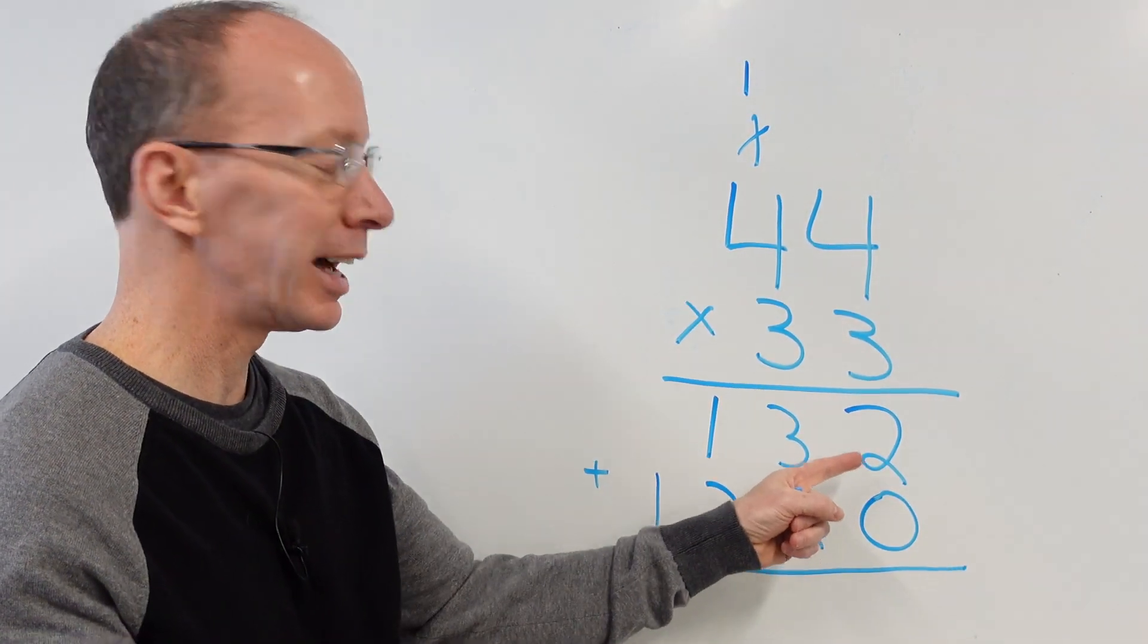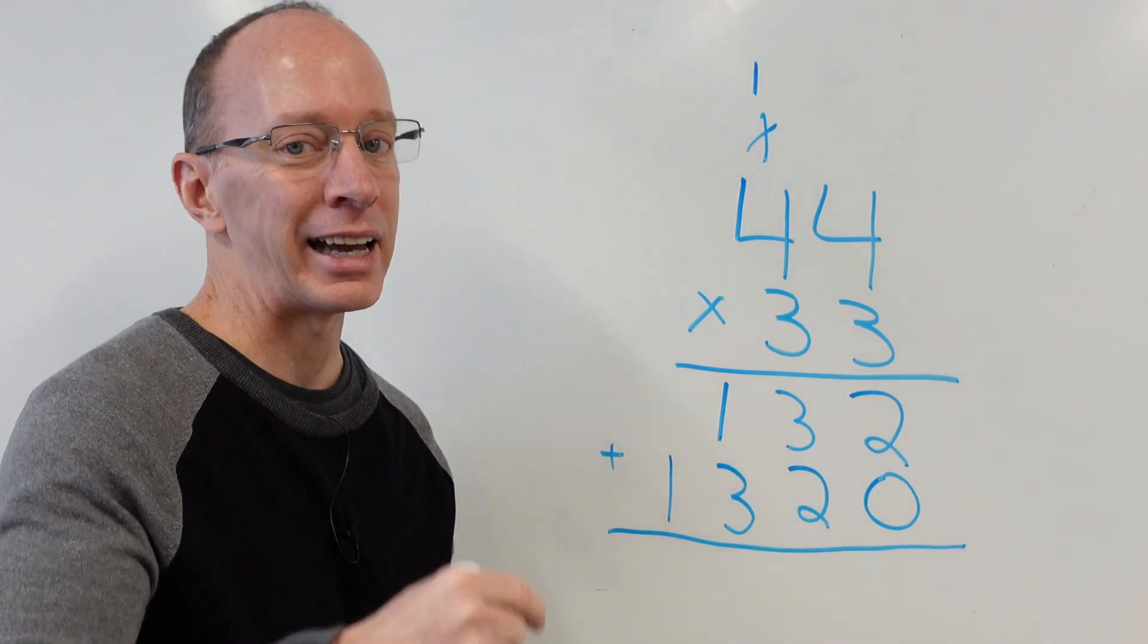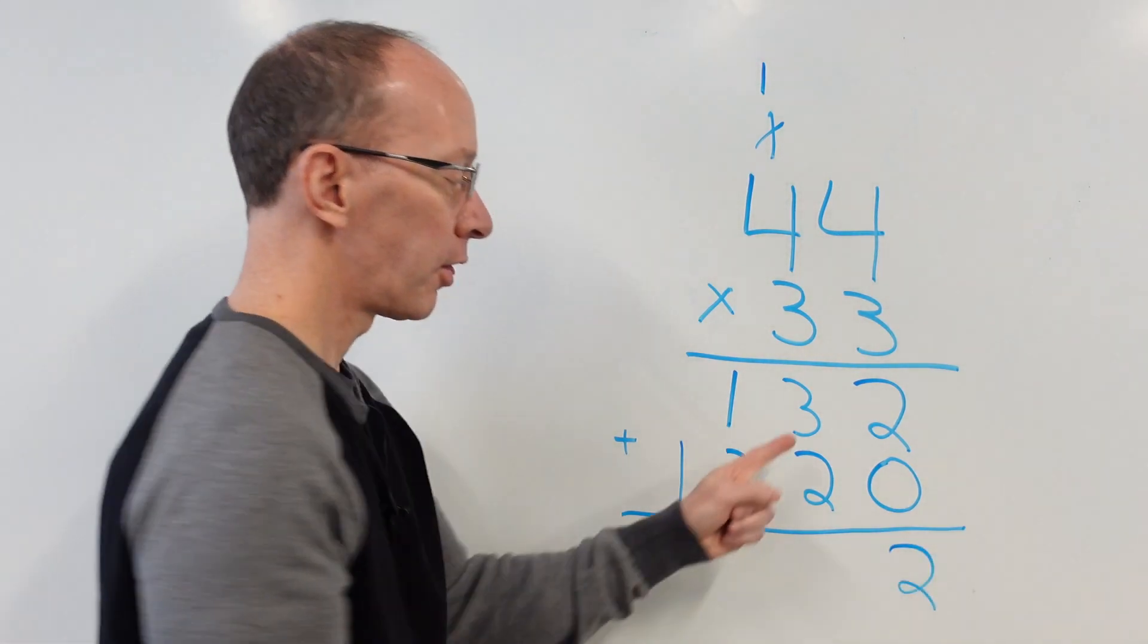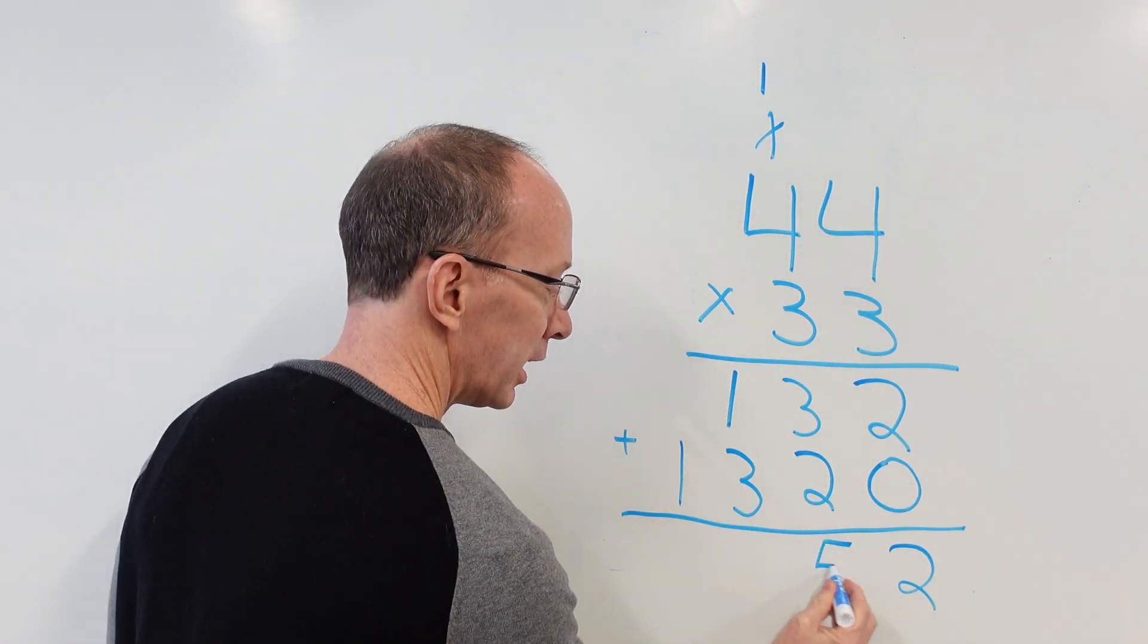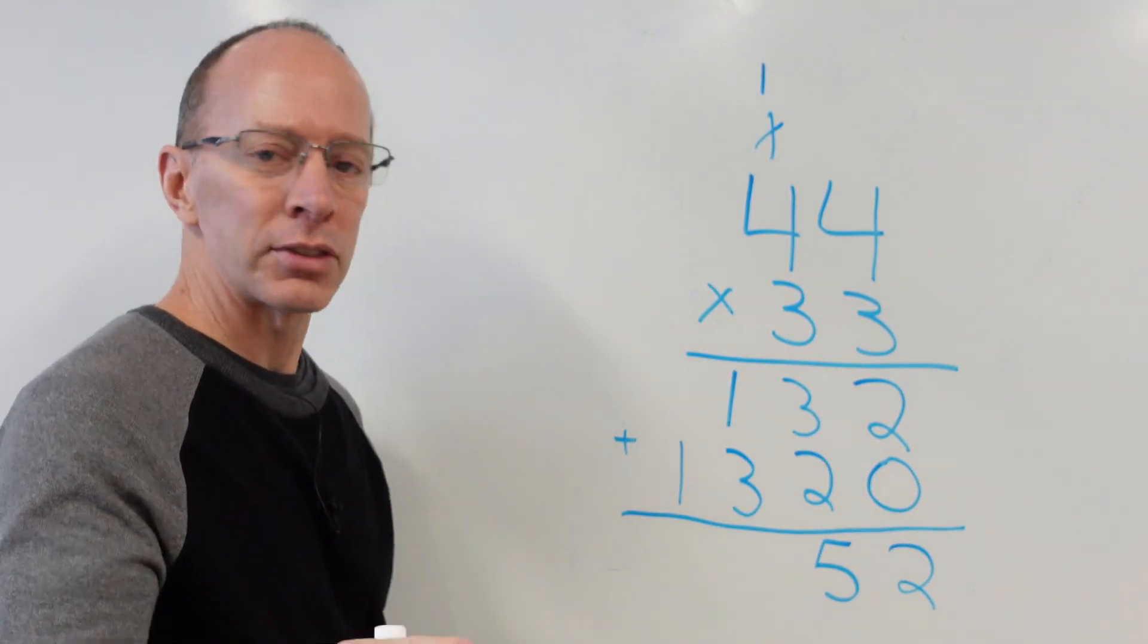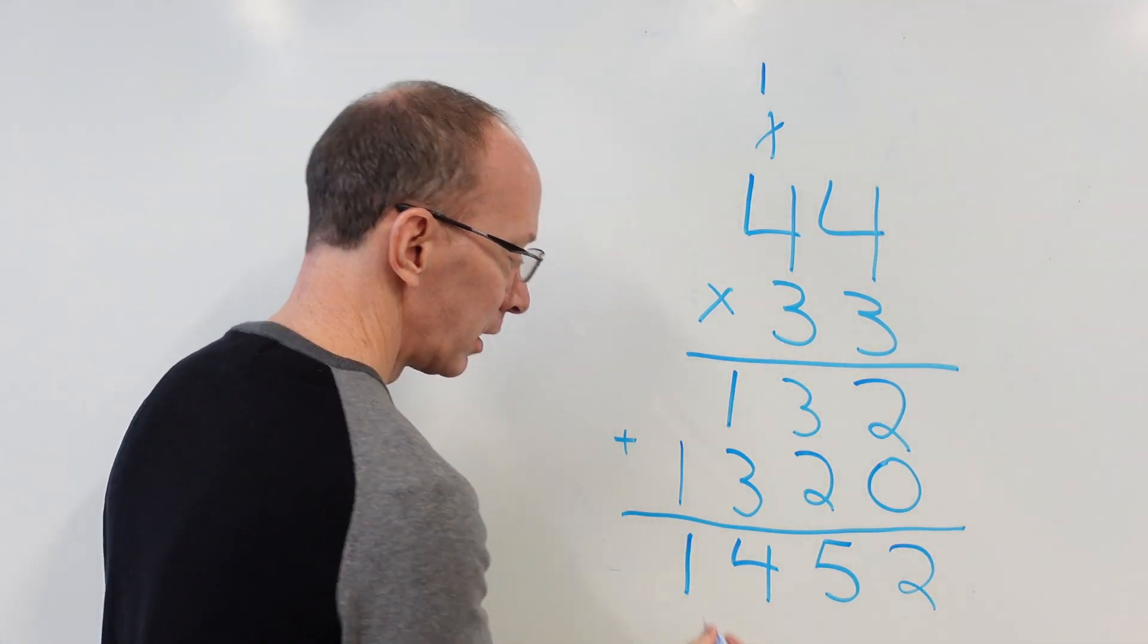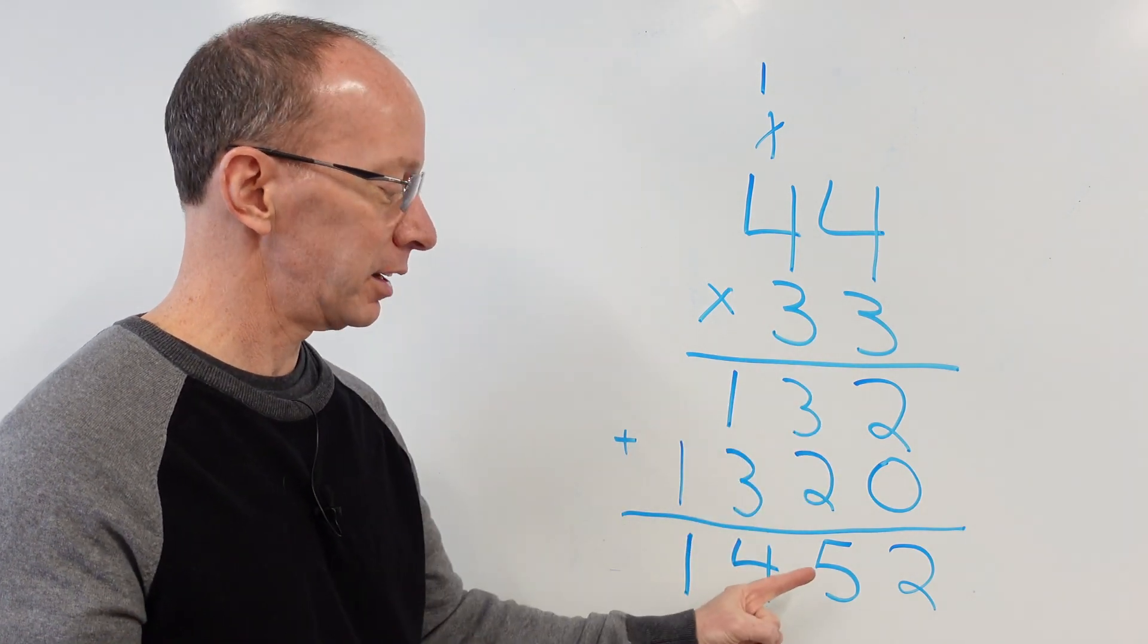So three times four was 12. I carry the one. Now I do it again. Three times four is 12 plus the one, plus the one. That is 13. So I put the 13 right here. Put a line under here. Boom. We got addition. We add these two numbers together. So let's go ahead and do that. Remember, there's rules in addition too. Add the ones, add the tens, add the hundreds, and so on. Let's do it. Two plus zero is two. Three plus two is five. Oh, you guys are doing good. Three plus one is cuatro. Uno, dos, tres, cuatro. Little Spanish for you. Four. And drop that one down. Boom. Right here. We have 44 times 33 equals 1452. Ready to do another one?